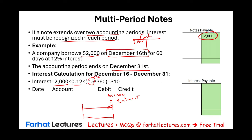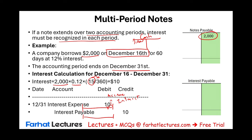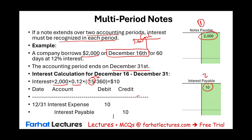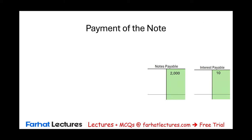We create a liability called interest payable: debit interest expense and credit interest payable for those 15 days. By year-end we now have two liabilities — the original notes payable of $2,000, and the interest payable of $10 that accrued from December 16th through December 31st.